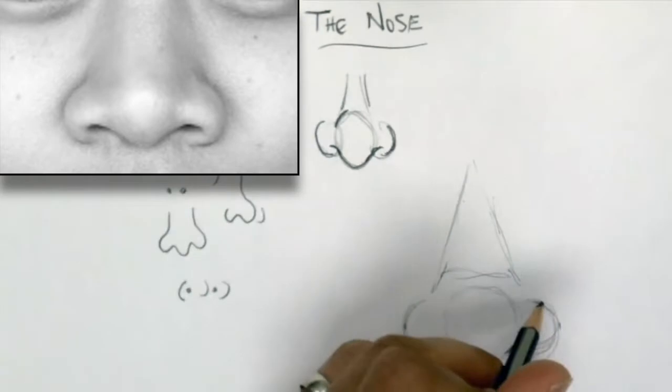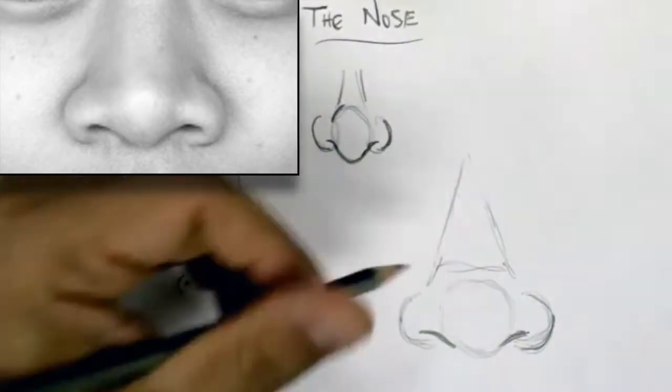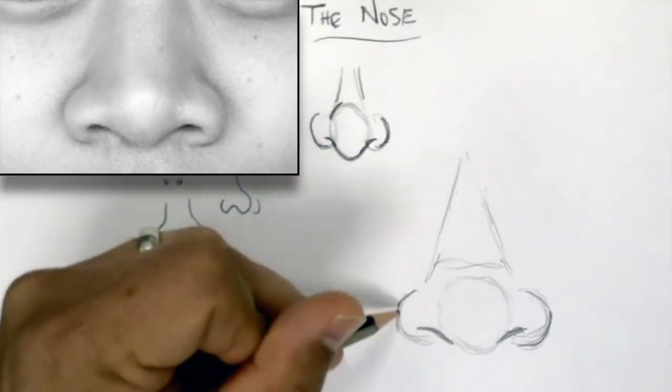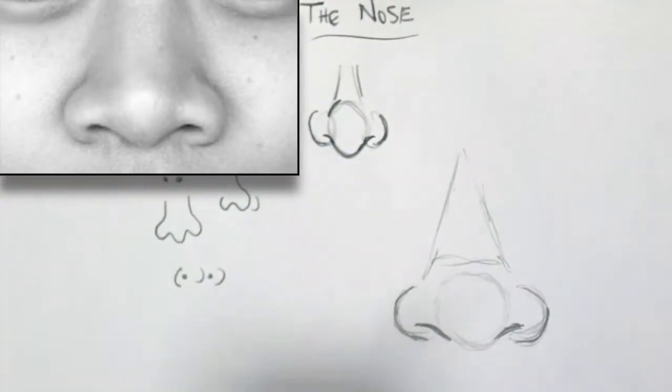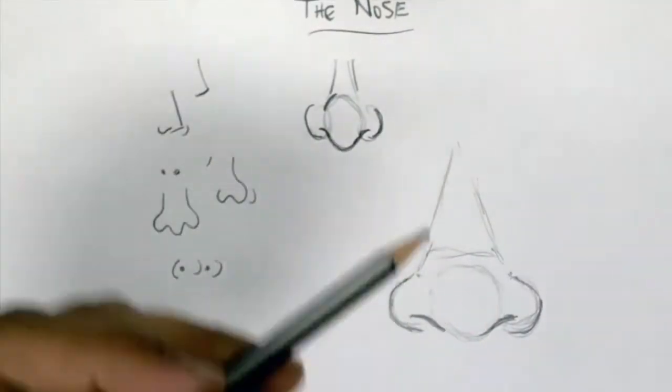The nostril lines help guide that process. The outer edges tuck in and around the outer edges of the nose, but they never connect back to the center of the nose. You'll leave some space there.